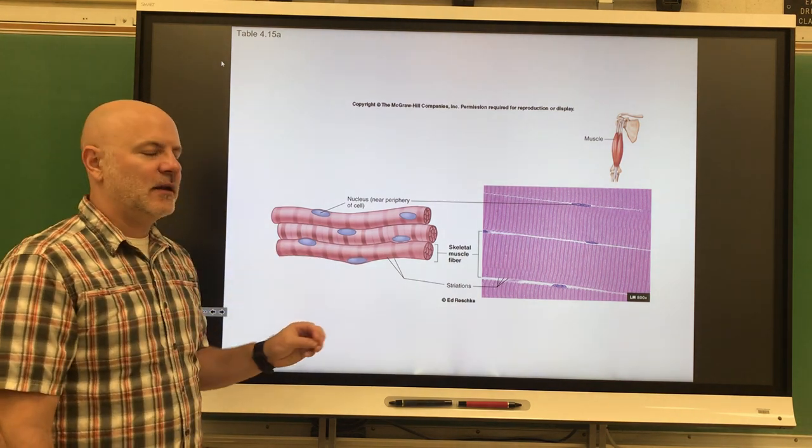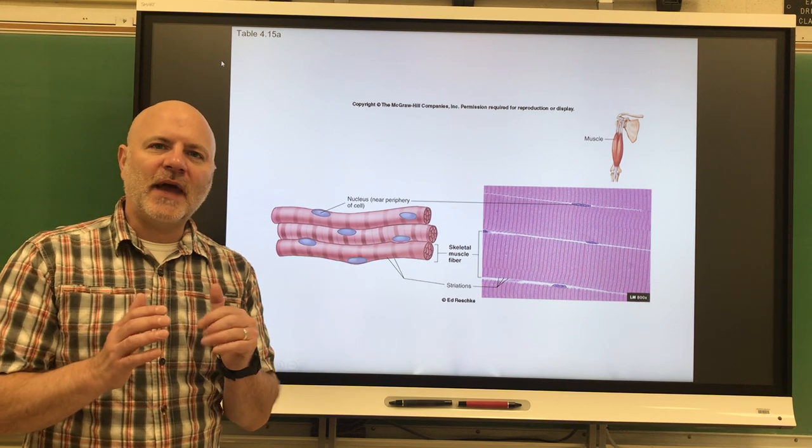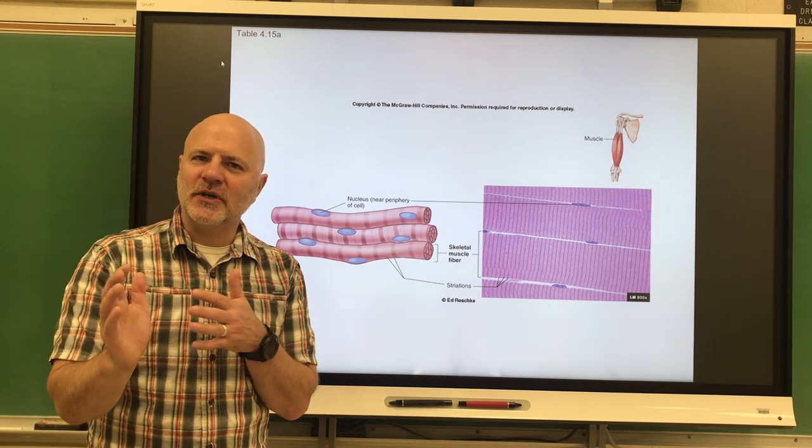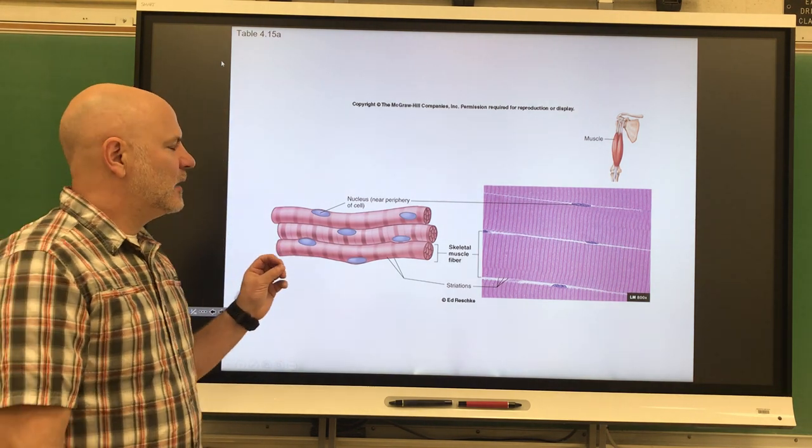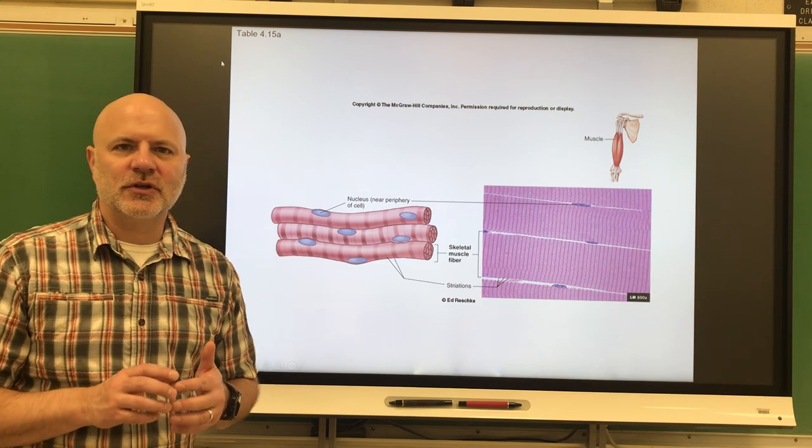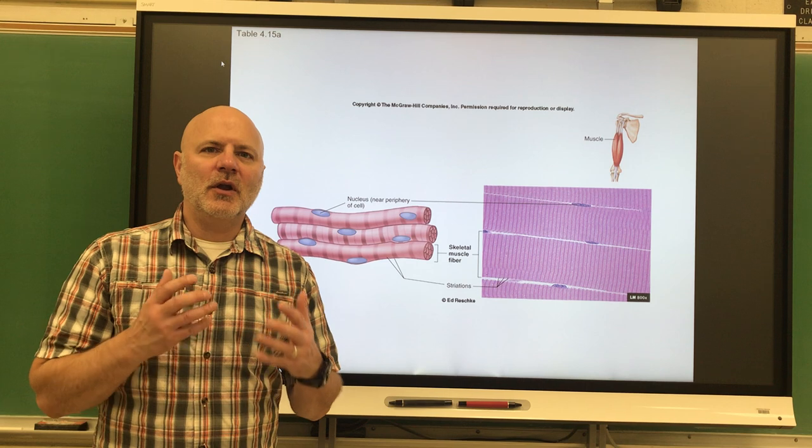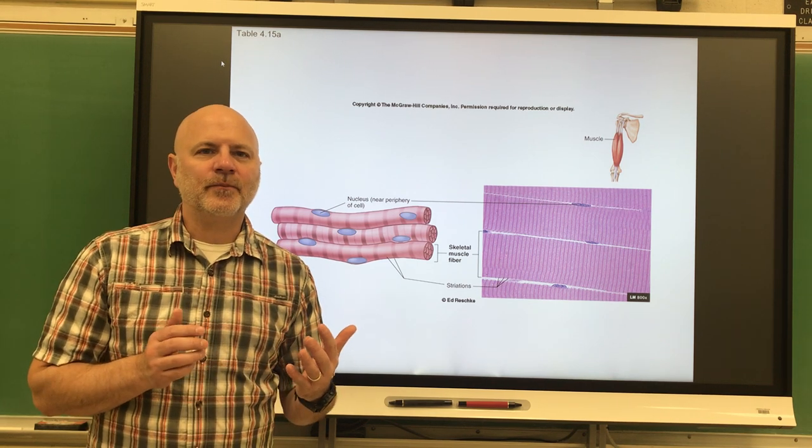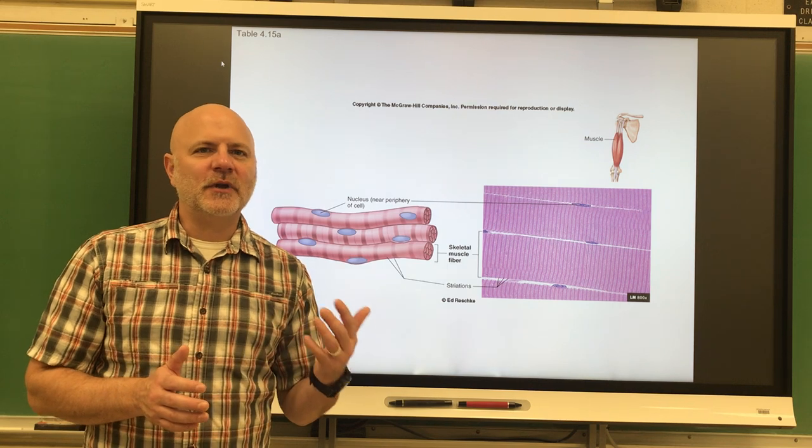Striations are these alternating dark and light lines that we see here. These cells are multi-nucleated, so there's more than one nucleus per cell. How that occurs is in our development we start off with a bunch of cells and these cells fuse together. Skeletal muscle tissue needs nerve stimulation to contract, so we need a nerve impulse coming from the brain or the spinal cord in order for those muscles to contract.